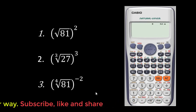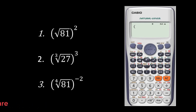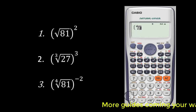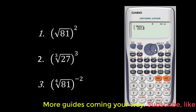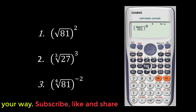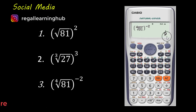Let's look at number 3. This time, open the brackets, press shift and the power key. Type in 4 outside, scroll in, type in 81, scroll to the right, close the bracket. Press the power key to give us a place to key in the exponent, then type in negative 2. When you press equal to, it gives you 1 over 9.